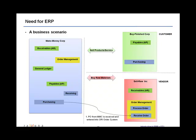This is similar to when you're on Amazon.com — when you place and confirm an order, it shows as a confirmed sales order because you are creating your purchase order within the vendor's system, which calls it a sales order. In this case, Make Money Corp is the customer for the vendor, Sell Raw Ink, which is the seller.